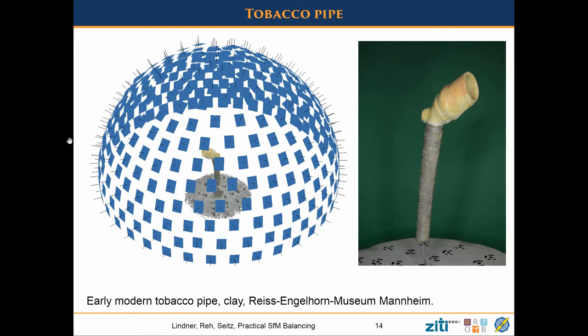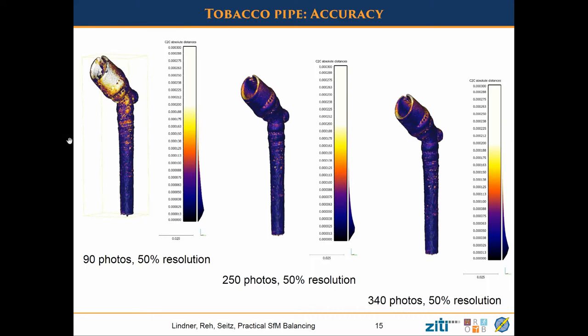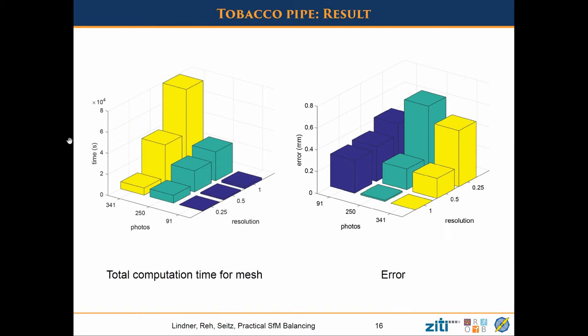We also wanted to test it on a real object. We have a tobacco pipe sent to us by the Reichsengelhorn Museum from Mannheim. This has quite a lot of details, even though you might not see it on the projector. We did the same analysis as with the wooden blocks. We see that as soon as we reduce the number of pictures we get more errors, but looking closely the white arrow is about 3 tenths of a millimeter, so it's actually quite small.